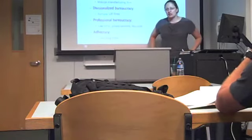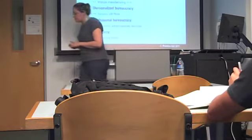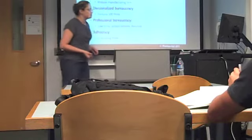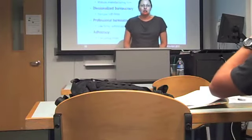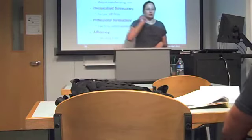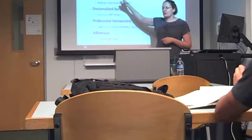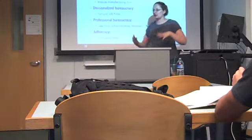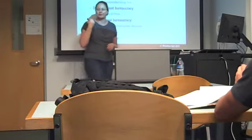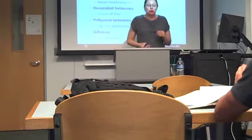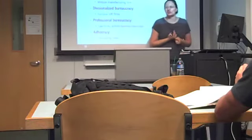Machine bureaucracies are companies in a relatively stable industry where the environment doesn't change as quickly. Divisionalized bureaucracies are multiple machine bureaucracies under one umbrella, where each one creates a different product — Procter & Gamble and Johnson & Johnson are really good examples. Professional bureaucracies, like the University of La Verne, are knowledge-based organizations that rely on the knowledge and expertise of their workers — the product is an education. Law firms and hospitals also fall under professional bureaucracy.